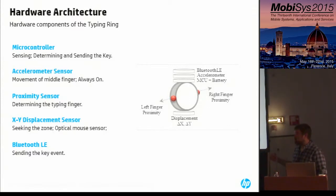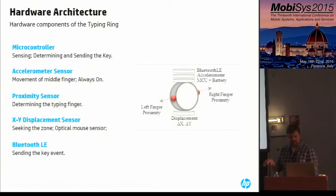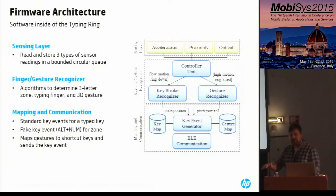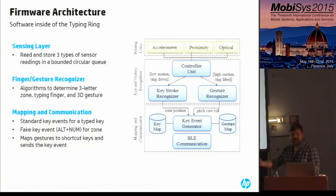The hardware components of the ring are as follows. On the top of the ring there are two main boards: a microcontroller for processing sensor data and determining the currently pressed key, and a Bluetooth Low Energy radio that sends key events to the end device. On the sides of the ring, two sensors determine the proximity of the fingers adjacent to the middle finger. Under the ring, a sensor using the same principle as an optical mouse provides displacement on the x- and y-axes. Inside the firmware there are three software layers: a sensing layer that reads and stores three types of sensor readings in a bounded circular queue; a finger and gesture recognition layer implementing algorithms to determine the three-letter zone, the finger used for typing, and a 3D gesture; and a logical mapping layer that maps fingers and gestures to keys and sends key events over the communication line.